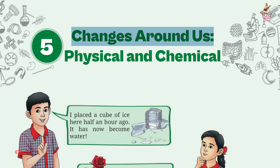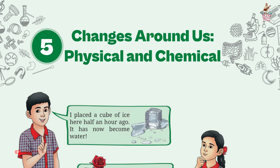Chapter 5: Changes Around Us — Physical and Chemical. Short Notes and Summary from Grade 7, Subject Science, Book Curiosity.